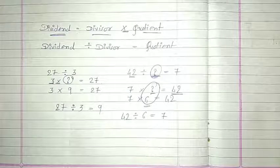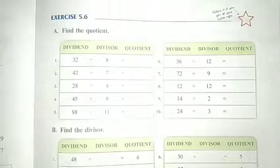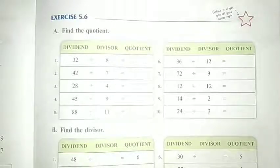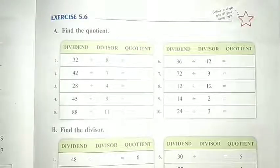So यही formula use करके हमें exercise number 5.6 solve करनी है. Children, take out your maths textbook and open page number 91. And read carefully question number 8: Find the quotient.